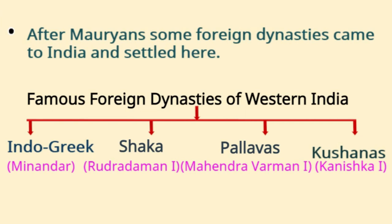The Indo-Greek dynasty's famous ruler was Menander. The Shaka dynasty's famous ruler was Rudradaman I. The Pallavas' famous ruler was Mahendravarman I. And the Kushana dynasty's famous ruler was Kanishka I.